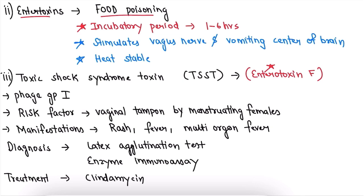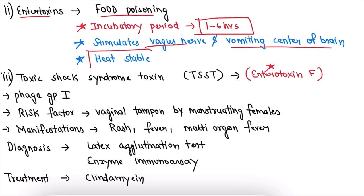The second toxin is enterotoxin, which is the cause of food poisoning. The important points: the incubation period is 1 to 6 hours, it stimulates the vagus nerve and vomiting center of the brain, and crucially, enterotoxin is heat stable.